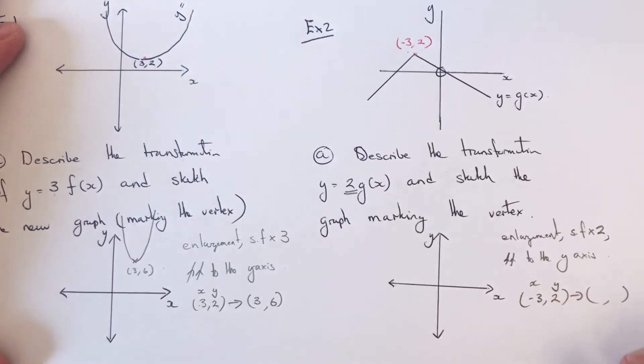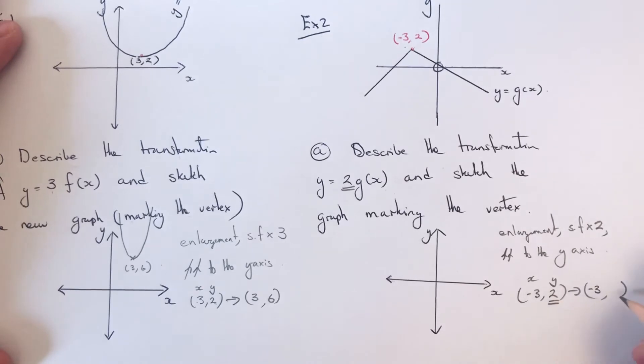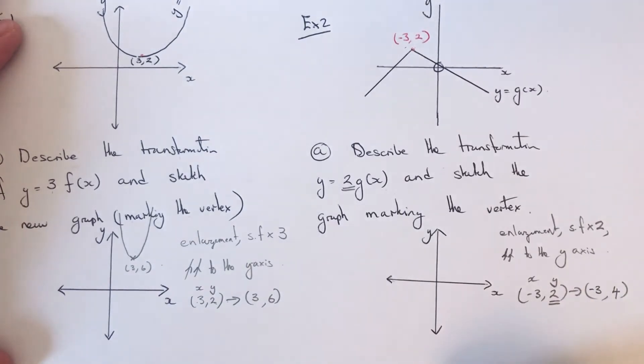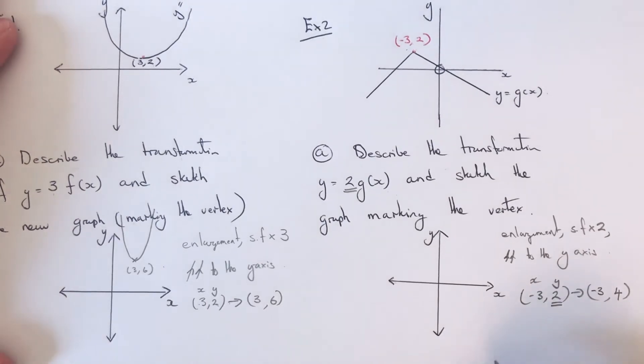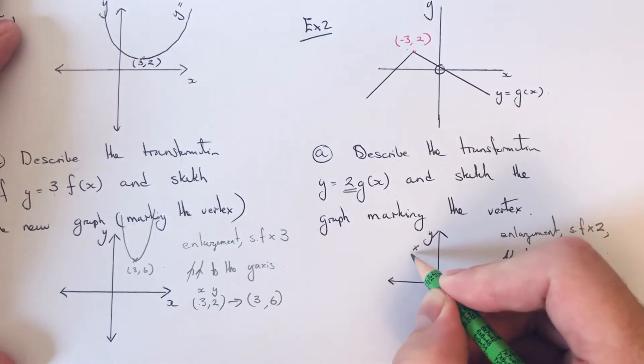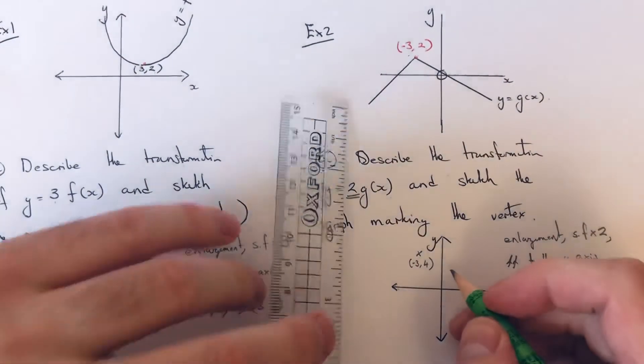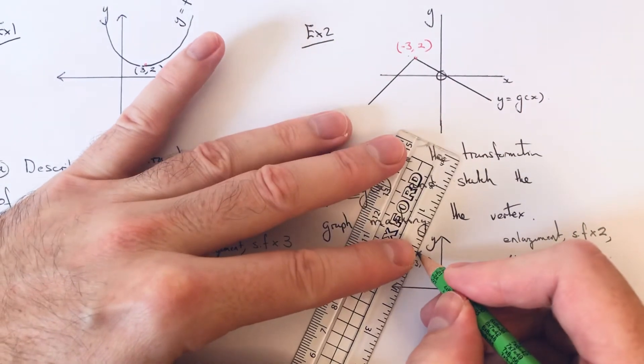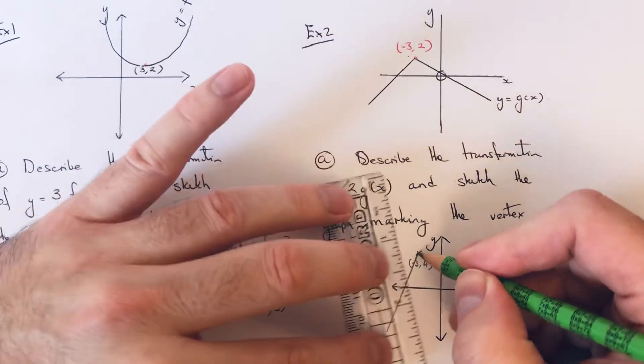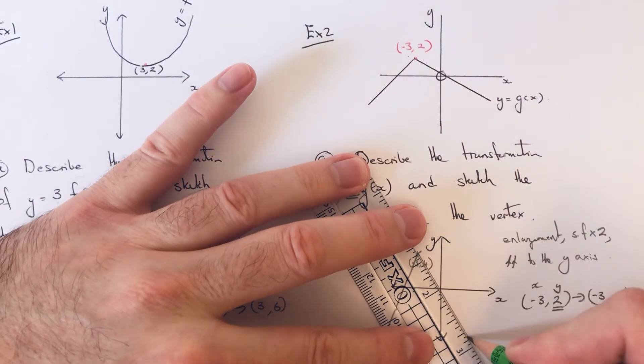So the vertex on our new graph would be at minus 3. We need to times this coordinate here by 2. 2 times 2 is 4, so the vertex would be at minus 3 comma 4. It's going to be a little bit higher up than the original one, and again the graph will be a little bit steeper than the original one.